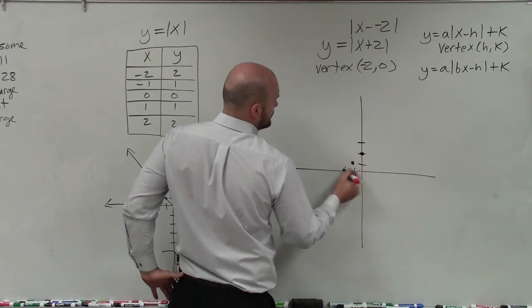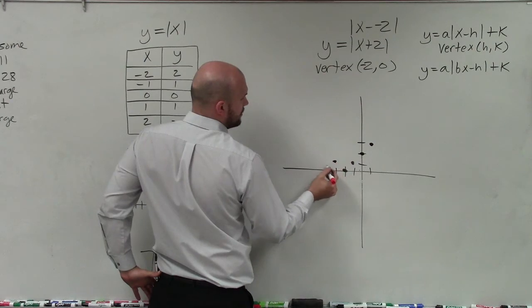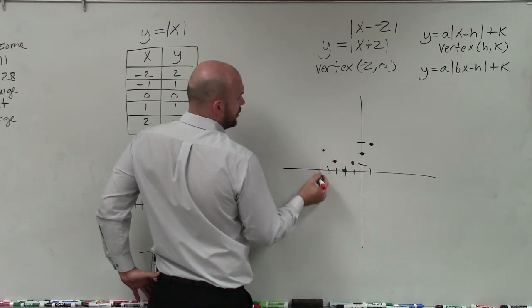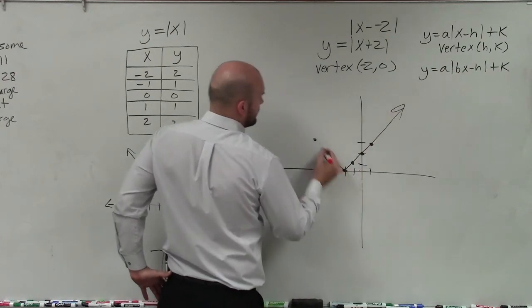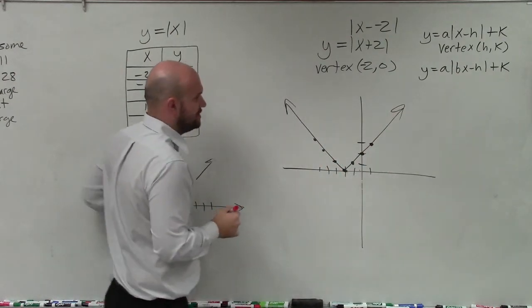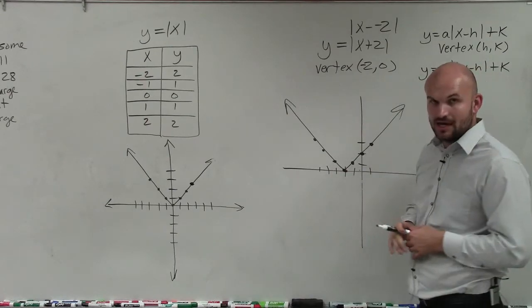Over 3, up 3. I can go over 1, up 1; over 2, up 2; over 3, up 3. And just follow that pattern in both directions. And you can see how now my graph has been shifted 2 units to the left.